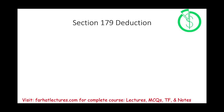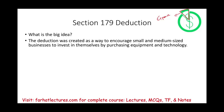Hello and welcome to this session in which we will discuss the Section 179 deduction. The big idea of Section 179 is to give businesses a deduction — more expenses to reduce their taxable income. It encourages businesses to purchase property, plant, and equipment. This deduction specifically targets small and mid-sized businesses, encouraging them to invest in themselves by purchasing equipment and technology, and that tax deduction is called Section 179.